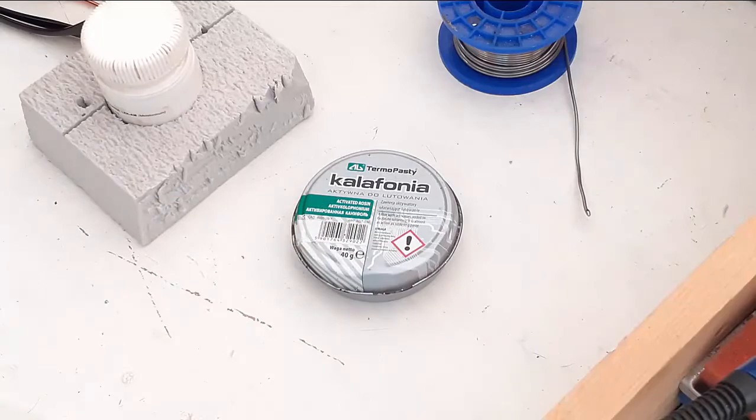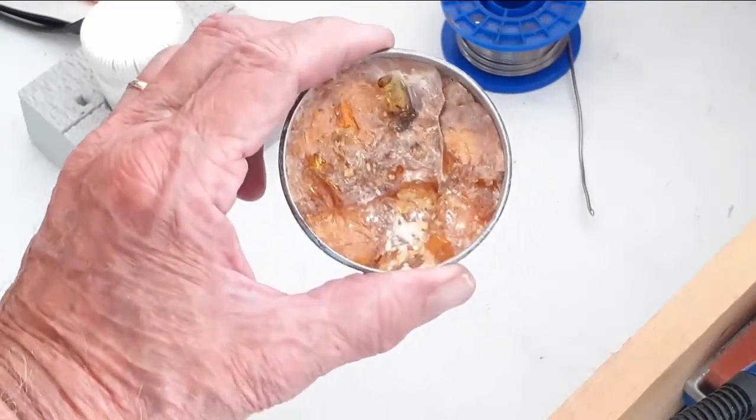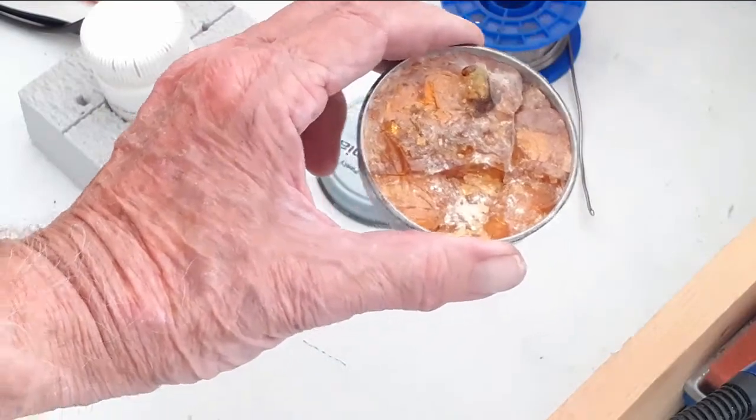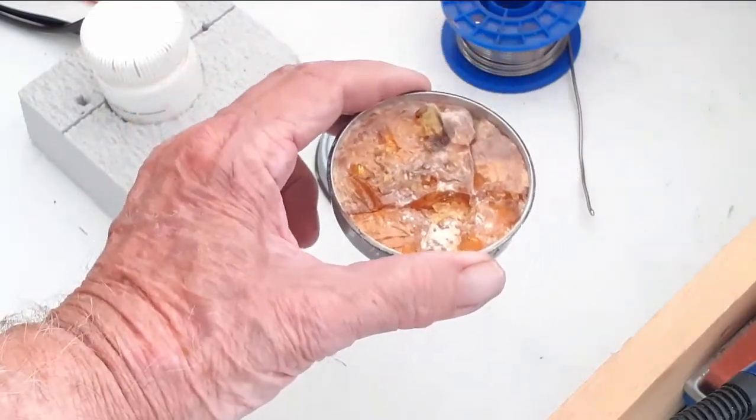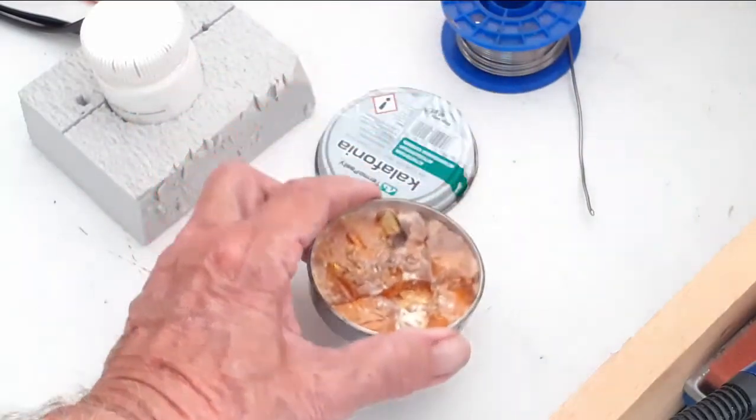It comes in a can that is probably one of the most difficult cans to get open. After struggling with the can, you'll find an amber colored resin. Mine is well used, so it looks a bit rough.